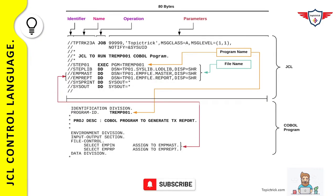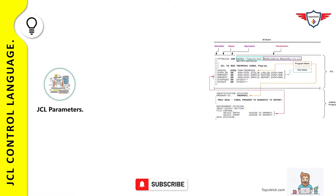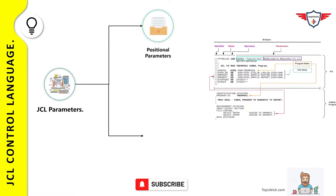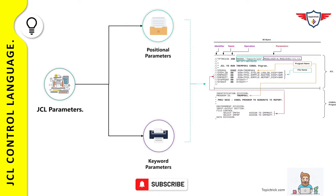JCL parameters are broadly categorized into two categories: positional parameters and keyword parameters. A positional parameter must be placed in a specific position within the JCL statement. If you want to omit a positional parameter, you must replace it with a comma. For example, two positional parameters are used in a job card: accounting information (five nines) followed by username (topic trick) — both highlighted in green.